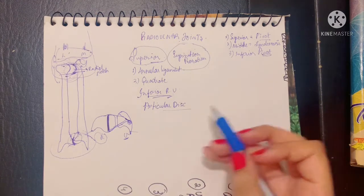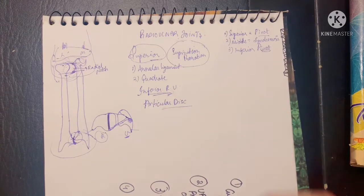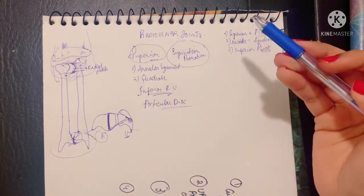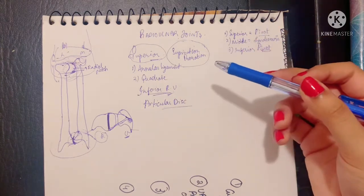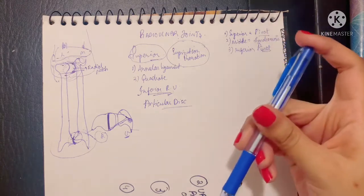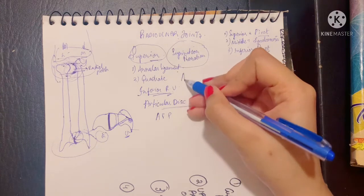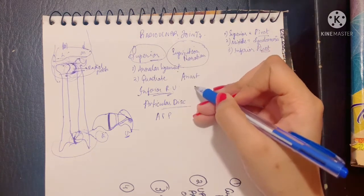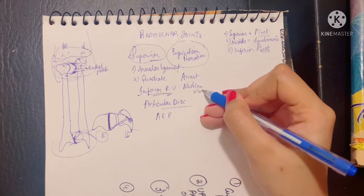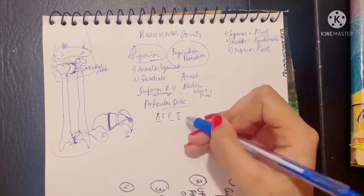The blood supply of the inferior radio ulnar joint is derived from the anterior and posterior interosseous arteries. Similarly, the nerve supply comes from the anterior and posterior interosseous nerves — in contrast to the superior joint, which relied on the anastomosis of the elbow and the median, musculocutaneous, and radial nerves.